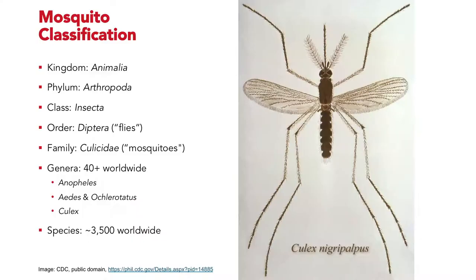Everything in biology and ecology starts with understanding your critter, so let's take a look at the mosquito. Mosquitoes are actually a type of fly — we call them Culicidae. The last time I checked, there were 43 different genera of mosquitoes and about three and a half thousand different species that occur worldwide.